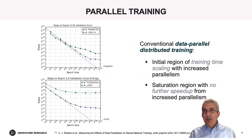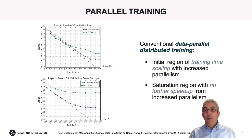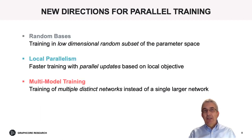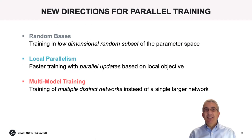This is the issue with larger batch sizes. In data parallel training, for example, there is an initial region where increasing the batch size and number of processors gives an advantage in training time — training time reduces with the number of processors and batch size. But then one reaches a saturation region where no further speed-up is possible through further parallelism. Different ways to tackle this problem that we have started to explore include random basis — we have a paper at this conference detailing our recent study in this direction — which exploits training over a low-dimensional subset of the large parameter space.